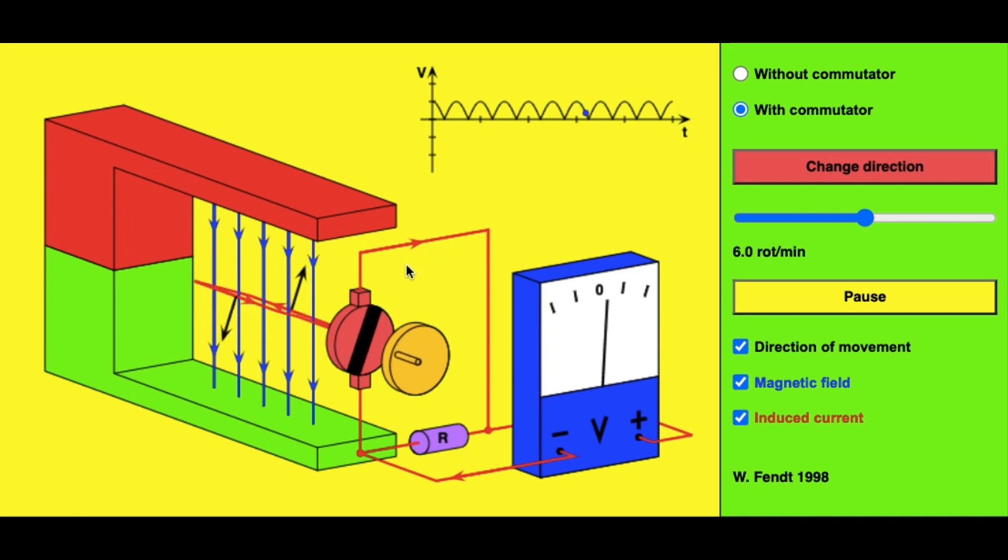By means of a split ring commutator and carbon brushes, we can see that the induced EMF ranges from a maximum to zero back to a maximum but does not change direction because this is a direct current generator.